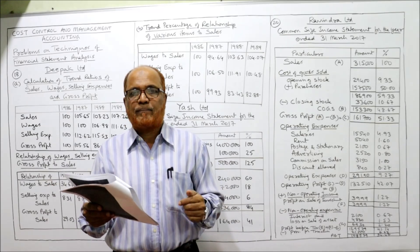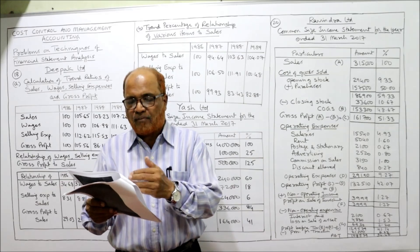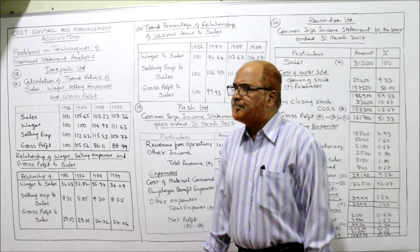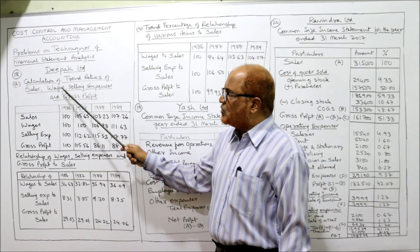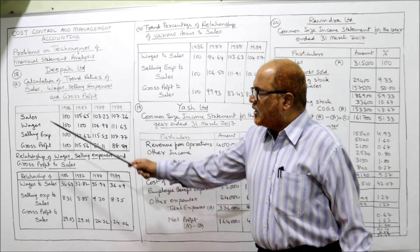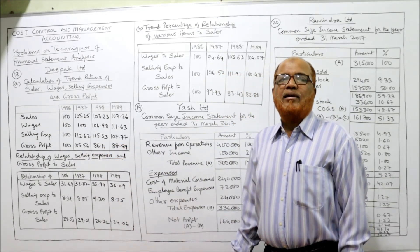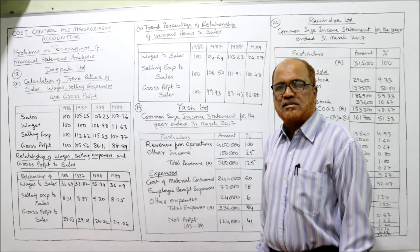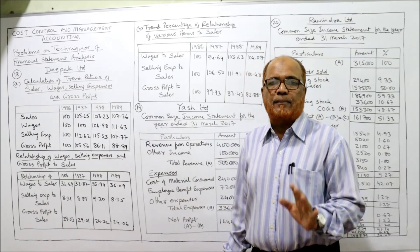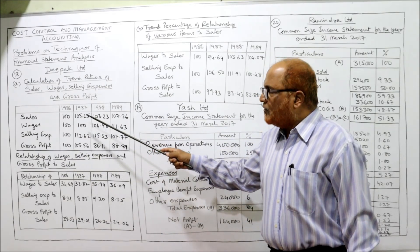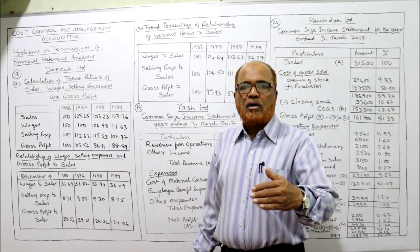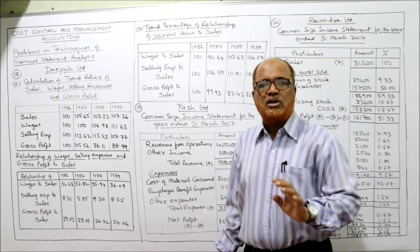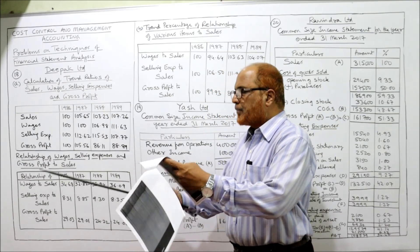The second part we will discuss later. First, we calculate the trend percentage of different items — sales, wages, selling expense, and gross profit. For calculating trend percentage, the first year is normally taken as the base year. Here the first year is 1986, so for 1986 all trend values should be 100. The formula is: trend percentage equals value in the current year divided by value in the base year, multiplied by 100. We will start with sales.